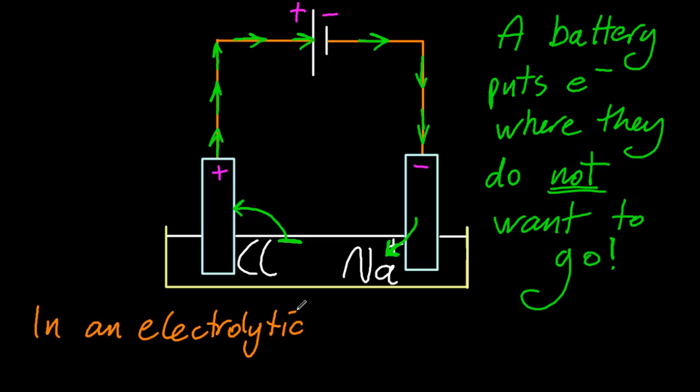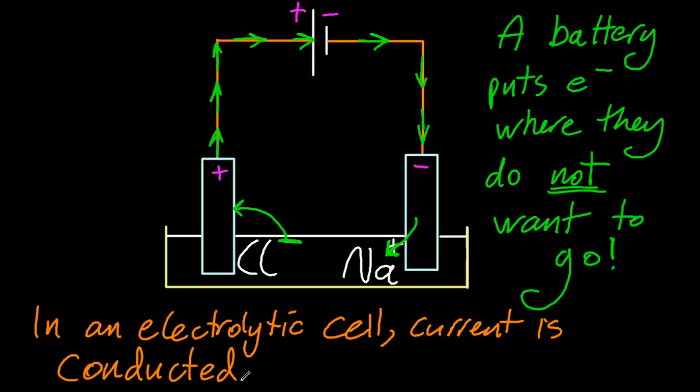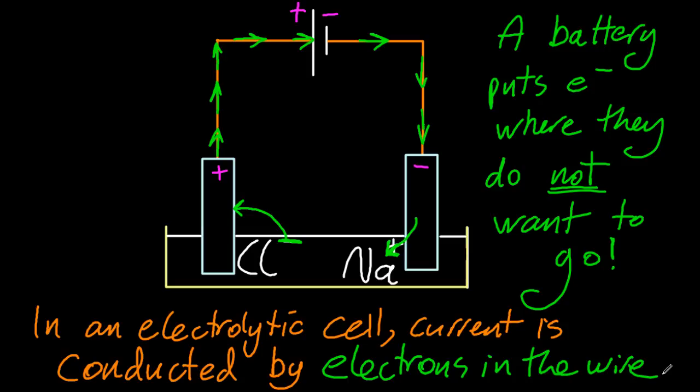So what two things are conducting the current? Well, in an electrolytic cell, such as the one above, the current is conducted by electrons in the wire. That's half the story.